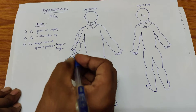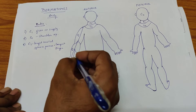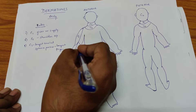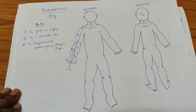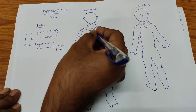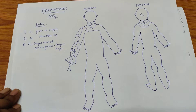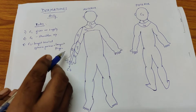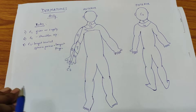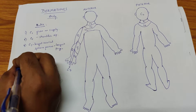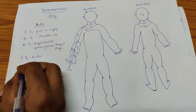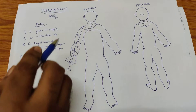Then comes the inner half — the thumb and index finger are supplied by C8. Then T1 follows. The next one is T2. So the sequence is C5, C6, C7, C8, T1, and then T2.